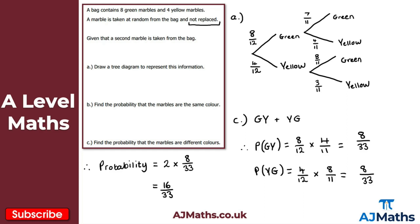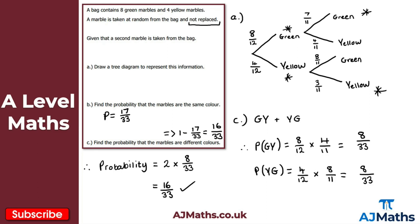You might notice that since the answer to part B was 17/33, for part C you could have simply done 1 minus 17/33 to get 16/33 directly. That would have been absolutely fine if you spotted it. But working through the tree diagram gives 16/33 either way, and that's the solution to question 1.